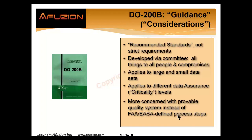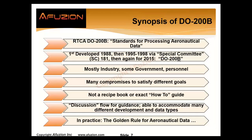DO200 is more concerned with a provable quality system rather than the process steps. DO200B is the third version — DO200 was the first, 200A was the second. Today it's DO200B. Standards for processing aeronautical data — not applying — was first developed 32 years ago, then changed by a special committee and changed again just five years ago.